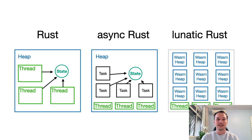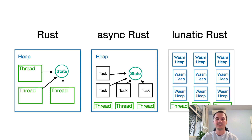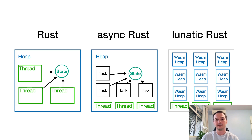Both threads and async tasks live inside one heap memory, meaning all threads and all async tasks share one heap space. Erlang is a bit different — each process gets their own heap memory, and we inherit this approach in Lunatic. This makes each process embarrassingly parallel because it doesn't share any memory with other processes; all communication between them happens through message passing. So the programming model is more similar to an actor approach than to traditional Rust applications.